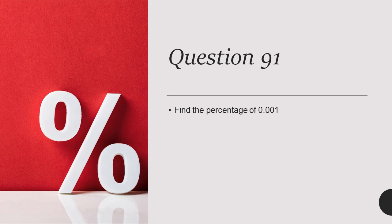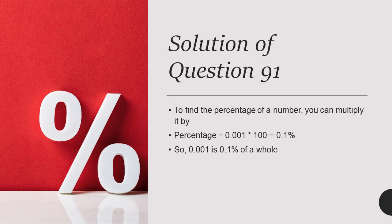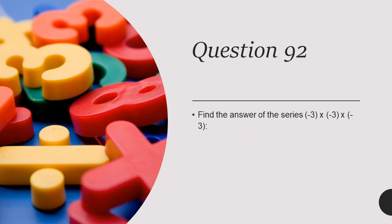Question 91 is: Find the percentage of 0.001. The answer is 0.1%. Pause the video to see the detailed solution.